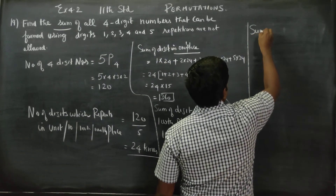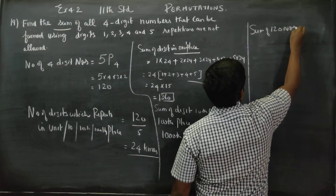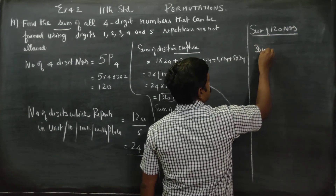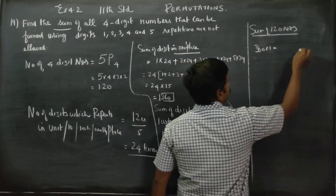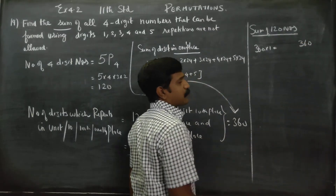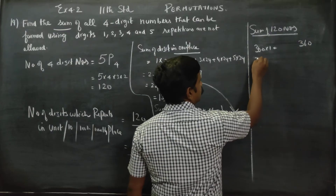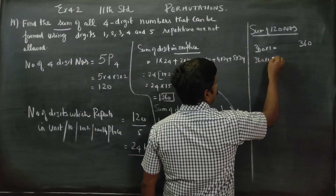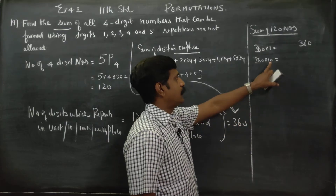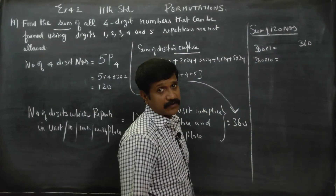The sum of all 120 numbers equals 360 into the ones place value, plus 360 into the tens place value, plus 360 into the hundreds place value, plus 360 into the thousands place value. That is: 360 × 1 + 360 × 10 + 360 × 100 + 360 × 1000.